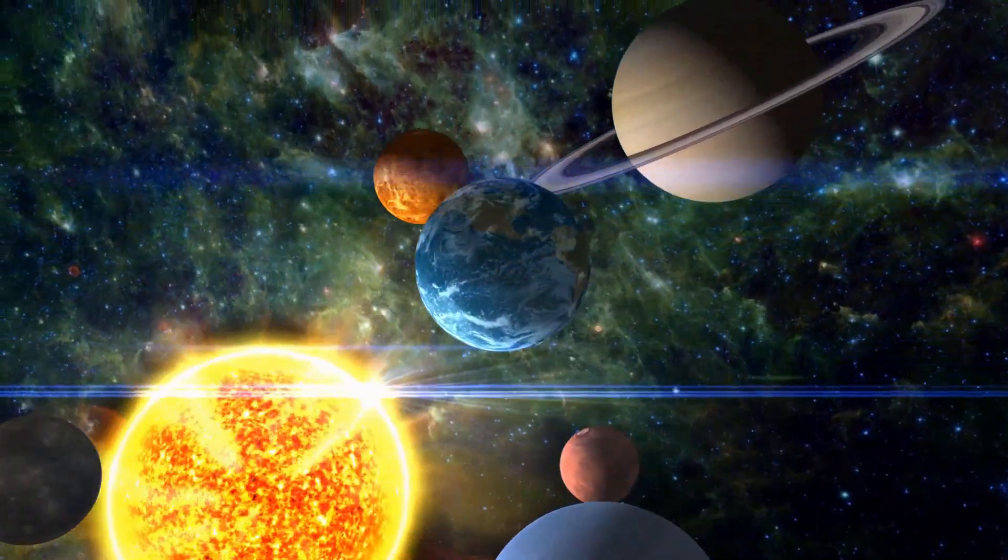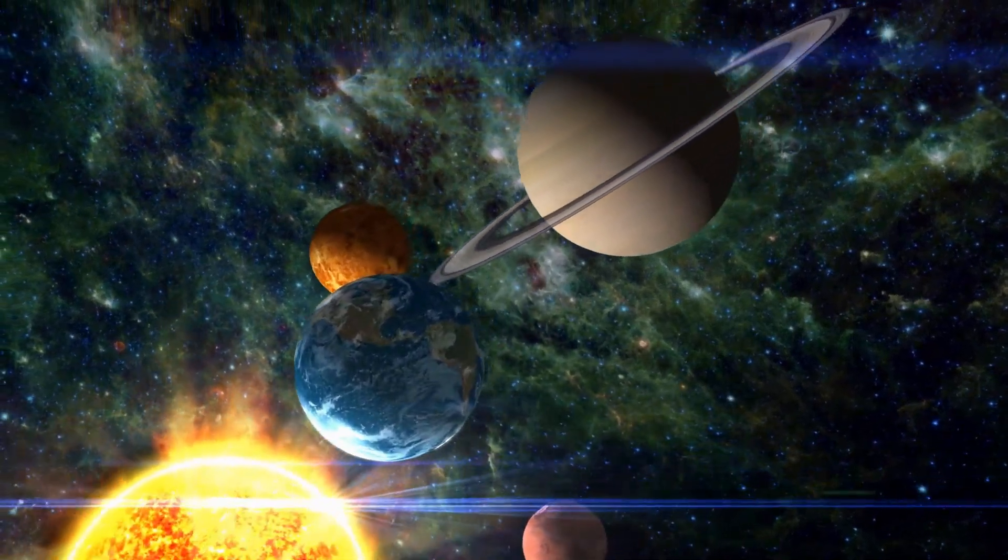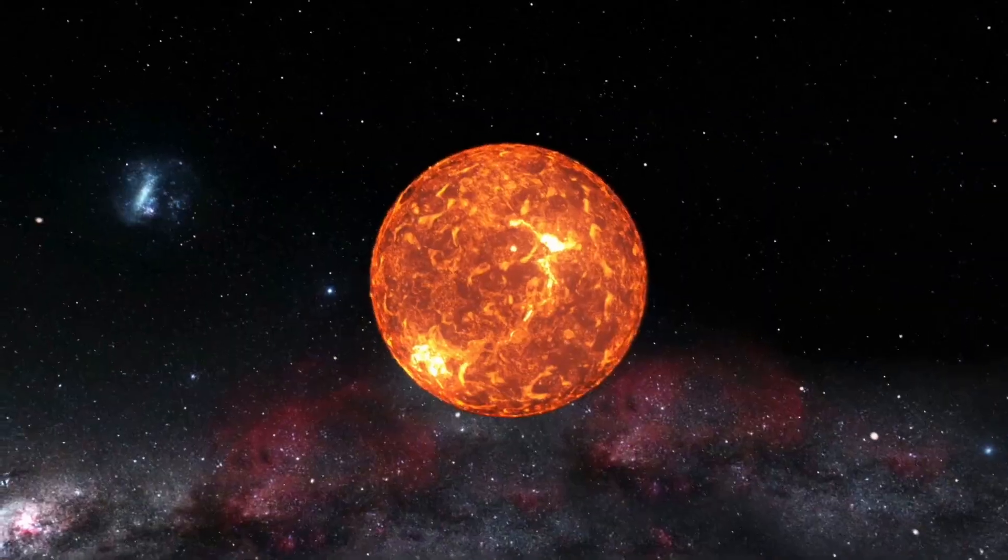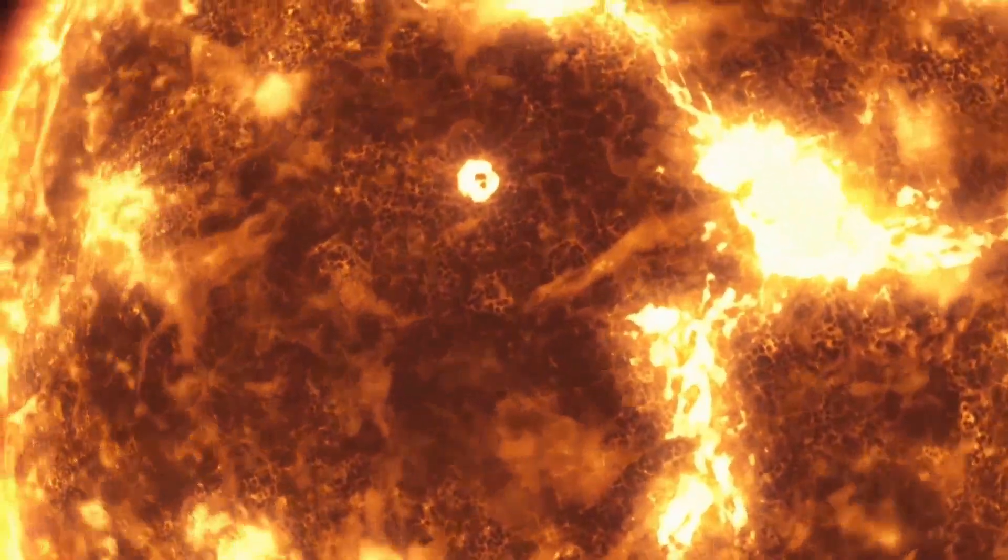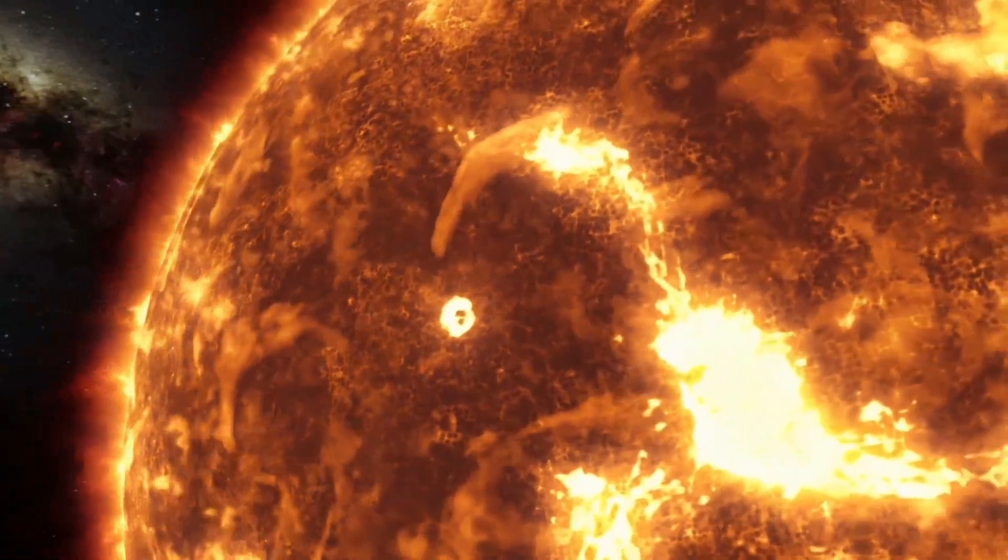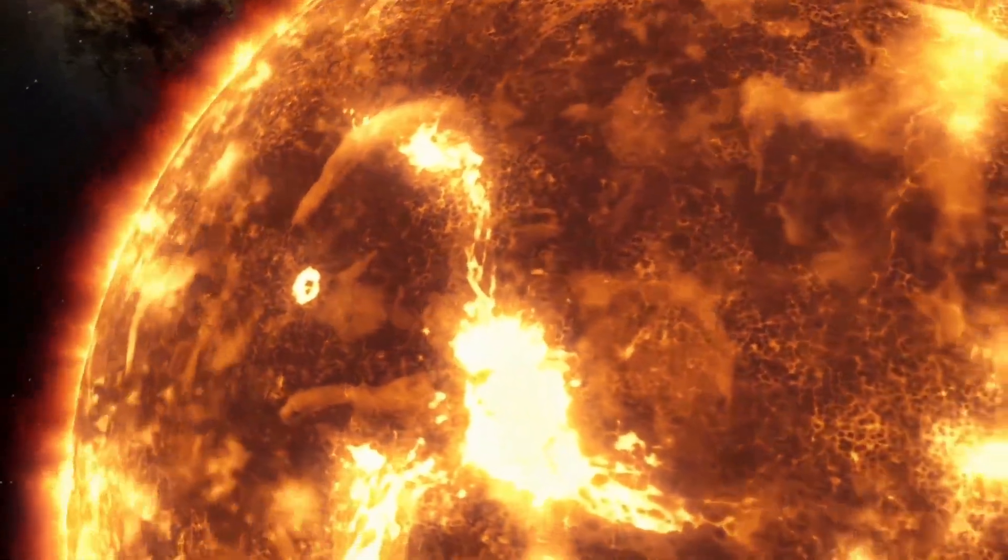The Sun's mass is about 330,000 times that of Earth and its diameter is approximately 864,000 miles, making it about 109 times larger than Earth.